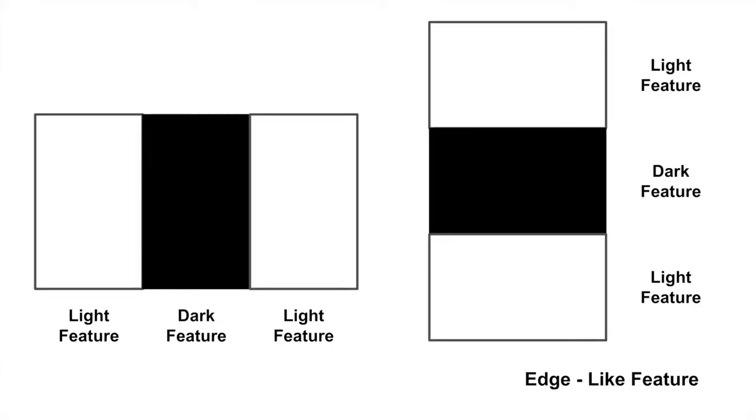The line-like features look for features that have a line of dark which is surrounded by light. A mouth could represent an example of a line-like feature because where the lips meet is darker than the lips itself.